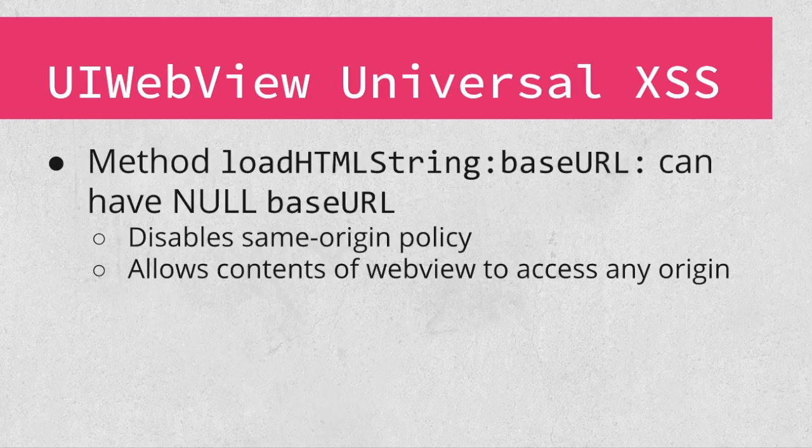In fact, under the right conditions, UIWebViews can be vulnerable to universal cross-site scripting. Depending on the context, this can have severe consequences. The vulnerability occurs when the application loads content using a method that has a base URL parameter. If the base URL is set to null, the same-origin policy is disabled for the loaded page. As a result, the contents of the web view can access any origin.